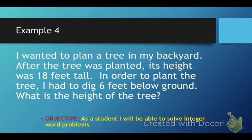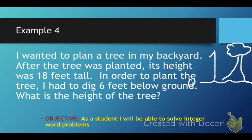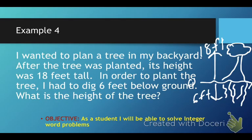So let's make some ground. Here's the ground, and we're going to say that's at 0. And it says the tree is 18 feet tall. So that means from here, from the ground to the top, is 18 feet. But it said in order to plant the tree, I had to dig 6 feet below the ground. So in order to plant the tree, I had to put all these roots in here. I had to plant these roots, and all these roots came down here. And those came down 6 feet.